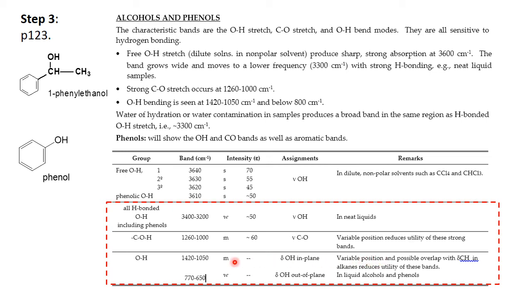Then we have the OH in plane bend between 1420 and 1050 with the same proviso, variable positions. And 1420 is getting fairly close to some of the CH bends that might occur from the methyl and methylene groups. We want to be careful of that. And finally we have the OH out of plane bend at 770 to 650. Again this is present in liquid alcohols and solid phenols. It's that broad shallow band in this range and it's often difficult to find.